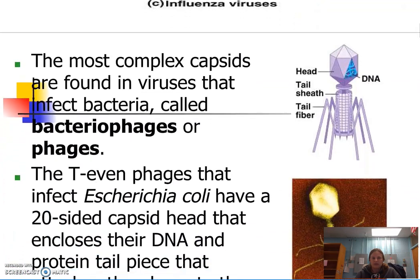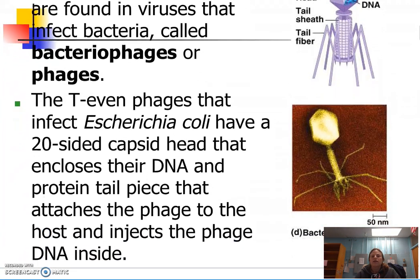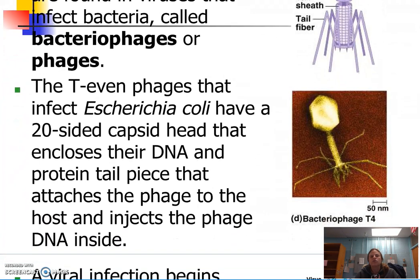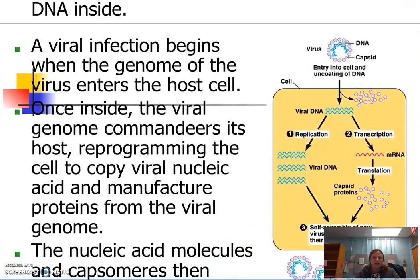The most complex capsid, which is that protective protein coating, is found in viruses that infect bacteria — called bacteriophages, or just phages. This should seem familiar because, thinking back to Hershey and Chase, in their experiment they used T2 bacteriophages to show that DNA is in fact the transforming agent.